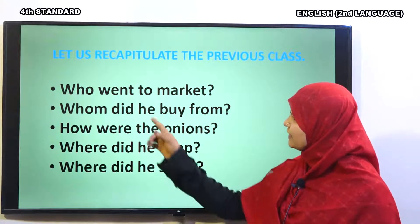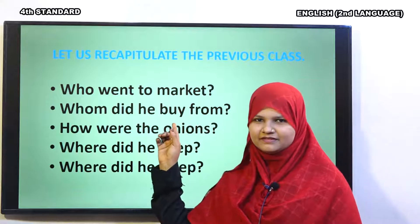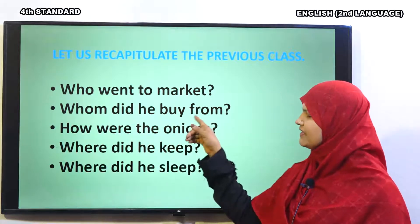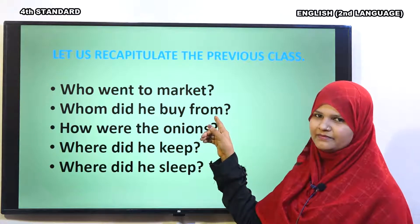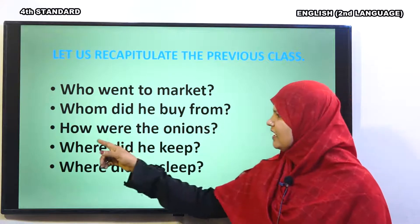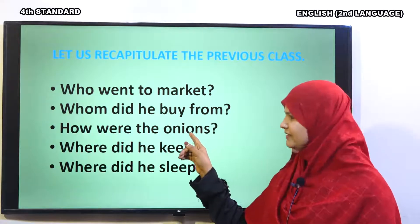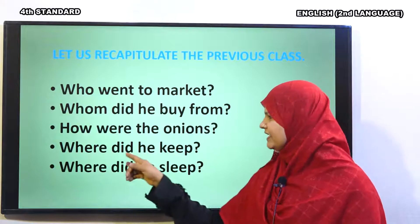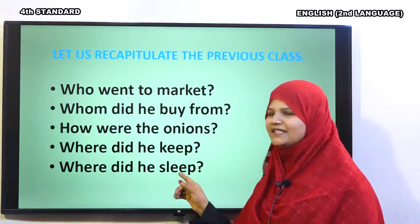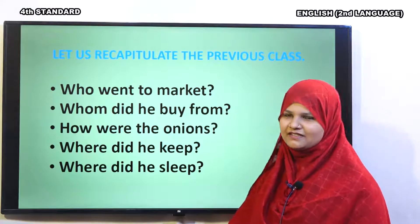Who went to the market? Did you remember? Then, whom did he buy from? Very good. How were the onions? Very good. Where did he keep? Good. Where did he sleep? Okay. Let us move to the answers.